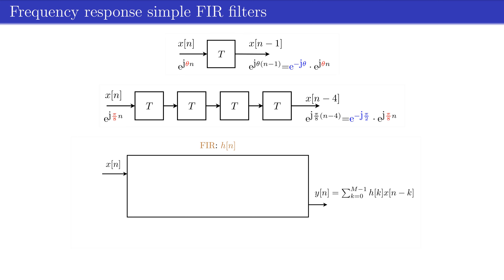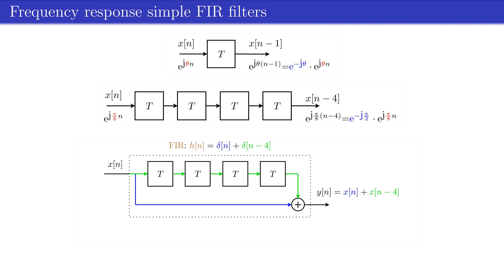In general, an FIR filter can be described by its impulse response h(n), and the output writes as a convolution sum of the input with the impulse response. For the given simple FIR example, the impulse response contains two terms, delta(n) plus delta(n minus 4), which represents the two branches of the realization scheme.